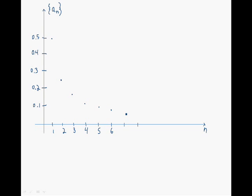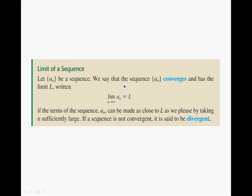This brings us to the following definition: the Limit of a Sequence. We consider an infinite sequence and say that the sequence converges and has limit L, written as: limit as n approaches infinity of an equals L, if the terms an can be made as close to L as we please by taking n sufficiently large. If a sequence is not convergent, it is said to be divergent. Finding the limit of a sequence is the same as finding the infinite limit of a continuous function, which we are already familiar with.